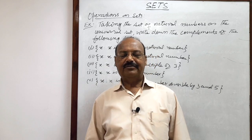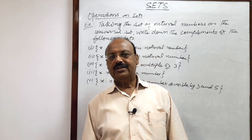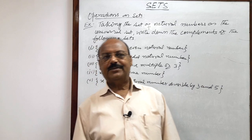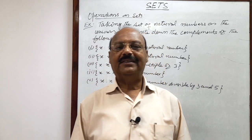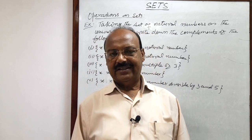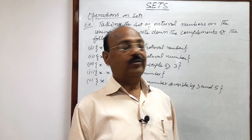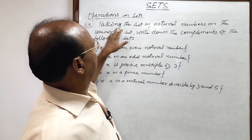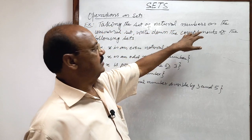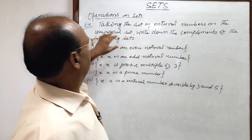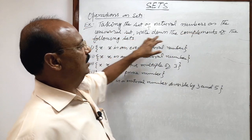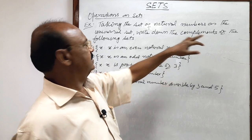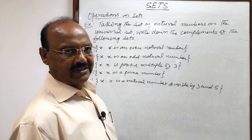Welcome students. Let us discuss a very important question from the chapter Sets. This has been taken from the subtopic operations on sets. The question is: taking the set of natural numbers as the universal set, write down the complements of the following sets.